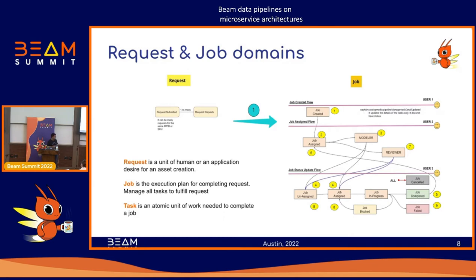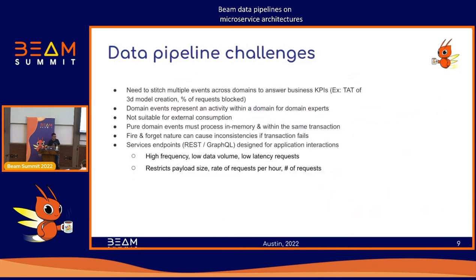When we want to create a data pipeline to answer certain business questions — like what is the turnaround time of model creation or image rendering — we need to trace all the way from the request submitted to when the task got completed. Between the start and end, there are lots of events triggering and lots of business logic happening. If you create a pipeline using these domain events, you'll be writing very messy code and recreating that business logic in your data pipeline, which is not an efficient approach.